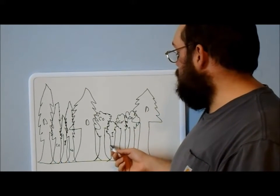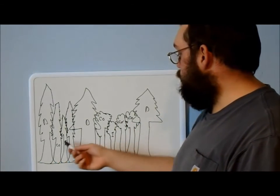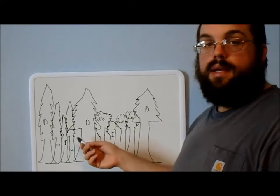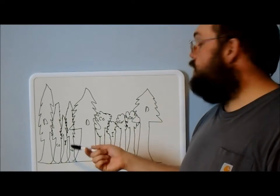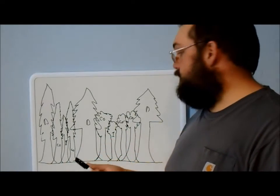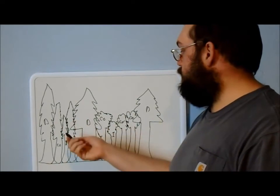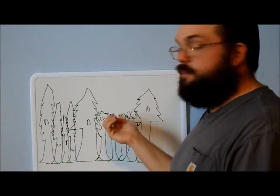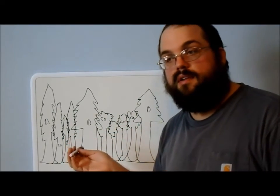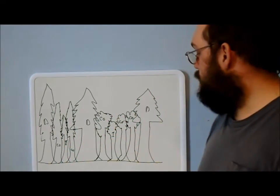Then you have the intermediate ones. This one and this one in the drawing would be considered intermediate. As you can't see them from a distance, they're getting very little sun — just a little bit from the top, maybe some from the sides, depending on where they are in the crown.